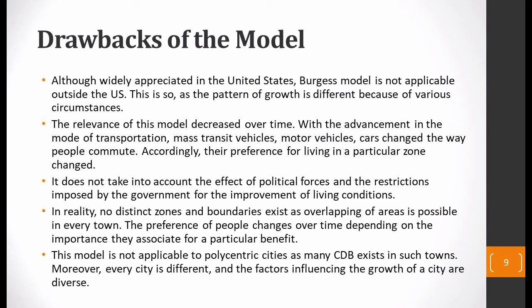To summarize Burgess's model, there are four postulates: first, the CBD is the city center, characterized by business activities and light manufacturing; second, encircling the city center are zones of different class residents — class differentiation is seen in different zones; third, poor people prefer to live near their place of work where conditions are poor, which is why slums and ghettos develop near the city center; and fourth, as we move away from the city center toward higher-class residential zones, the quality of housing and living conditions progressively improves.